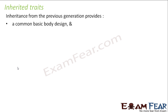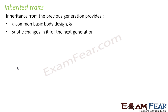Inheritance from your parents will give you a basic body design. The kid of an elephant will be an elephant, the kid of a human will be a human, and the kid of a plant will be a plant. But on top of that, it also gives subtle changes for the next generation. These changes are more prominent for organisms which reproduce sexually than those which reproduce asexually.